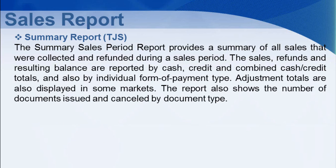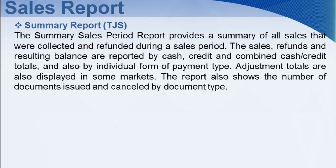Summary Report: The summary sales period report provides a summary of all sales that were collected and refunded during a sales period. The sales, refunds, and resulting balance are reported by cash, credit, and combined cash or credit totals, and also by individual form of payment type. Adjustment totals are also displayed in some markets. The report also shows the number of documents issued and canceled by document type.